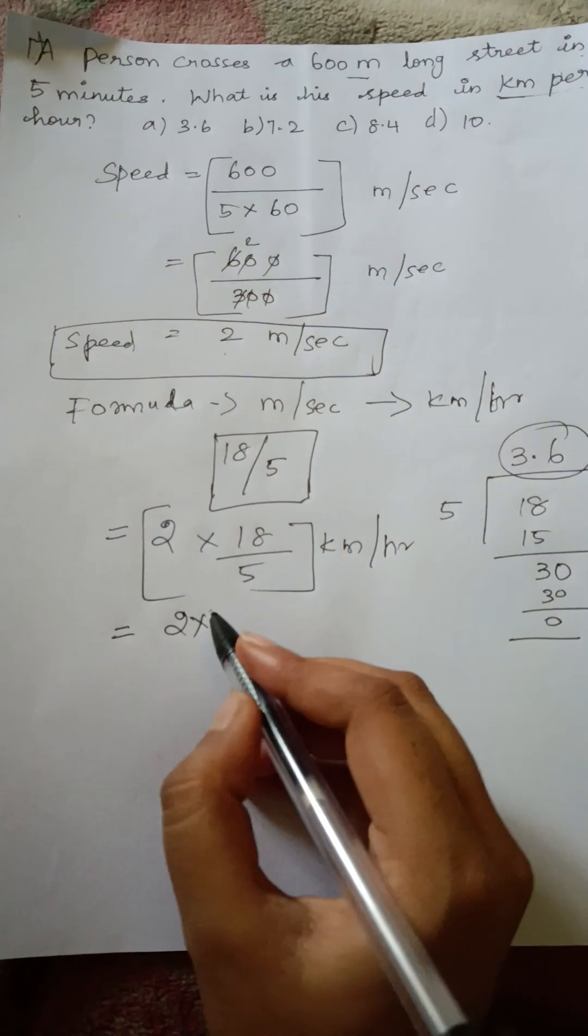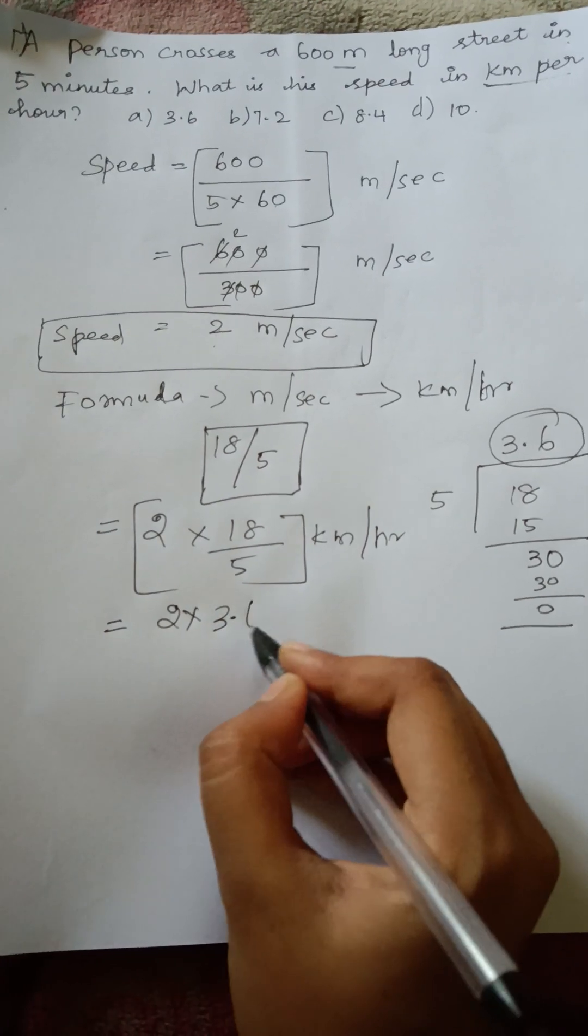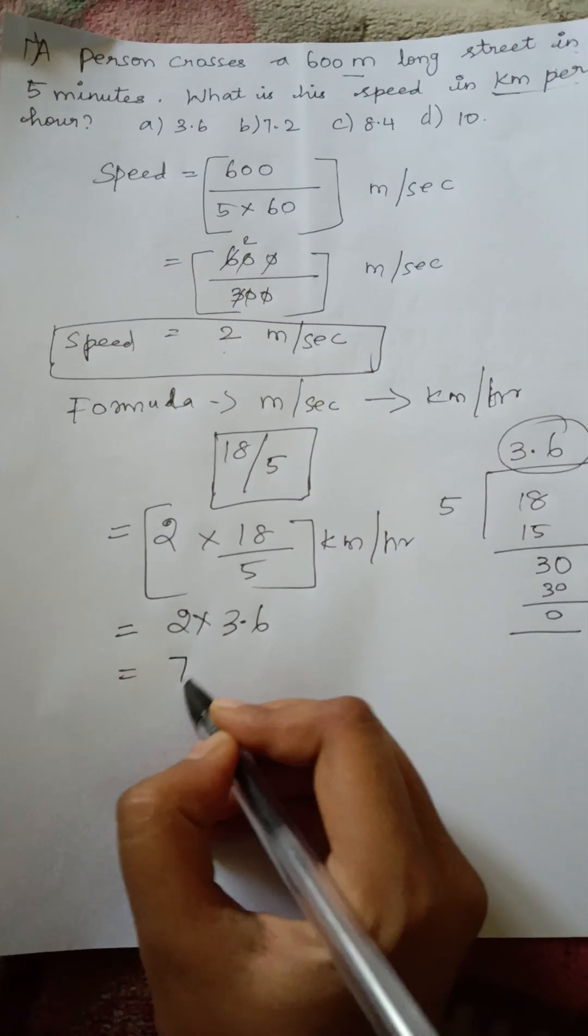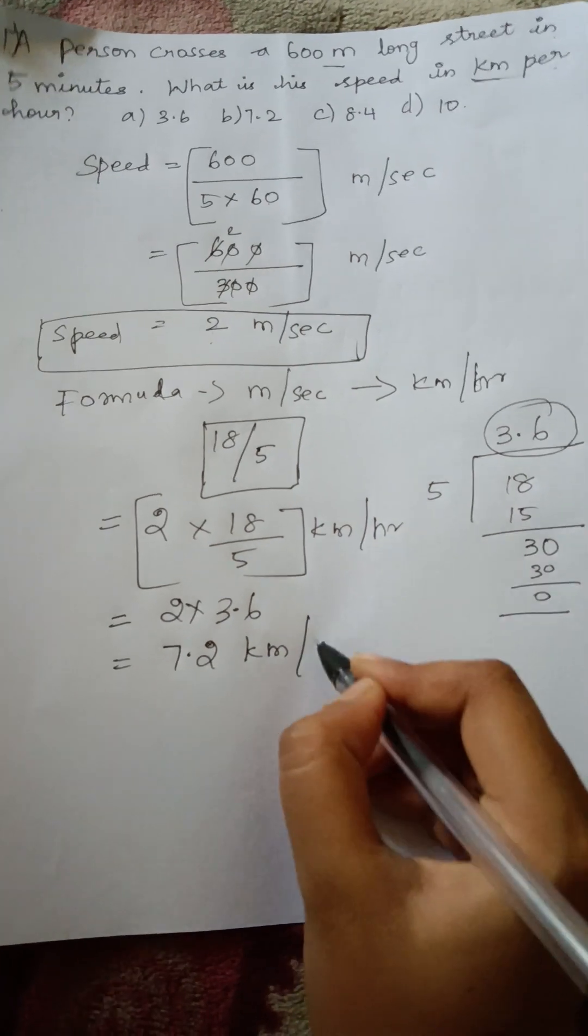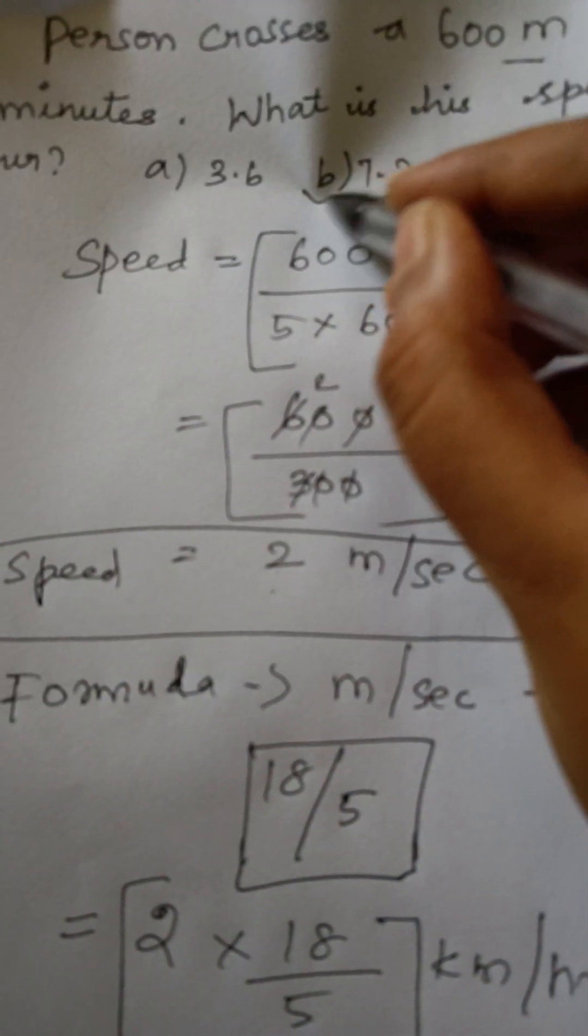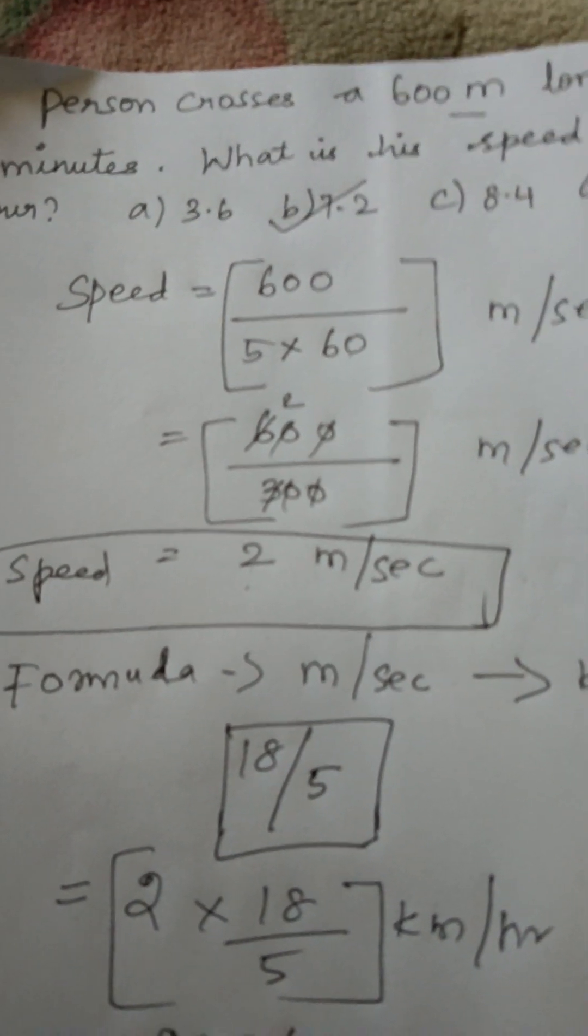2 into 3.6 which is 7.2 kilometer per hour, so the answer will be B: 7.2 kilometer per hour.